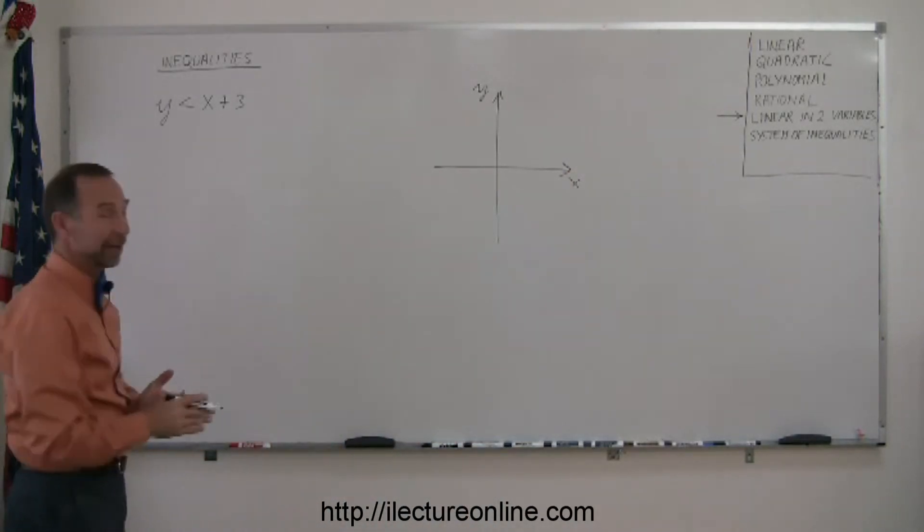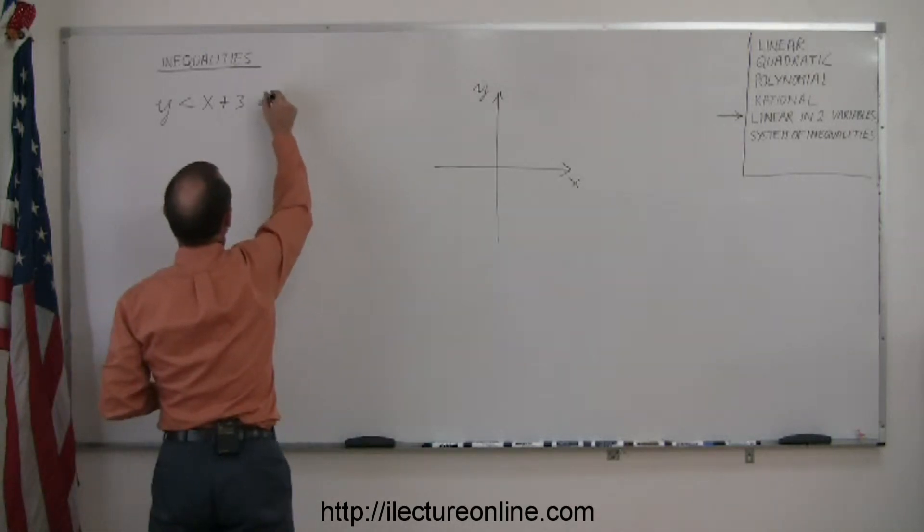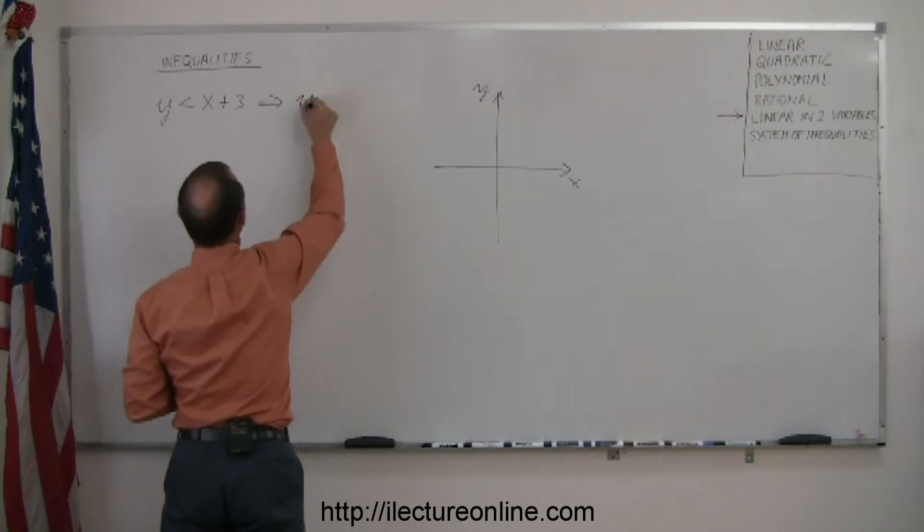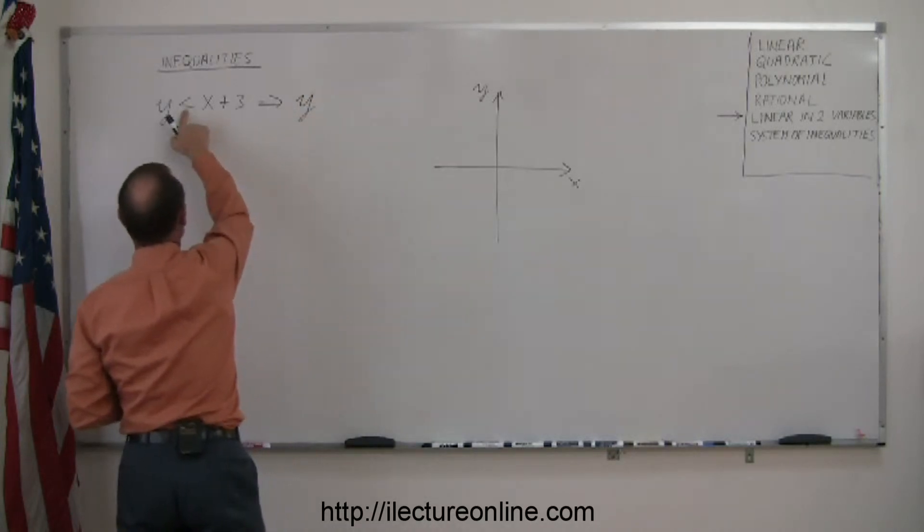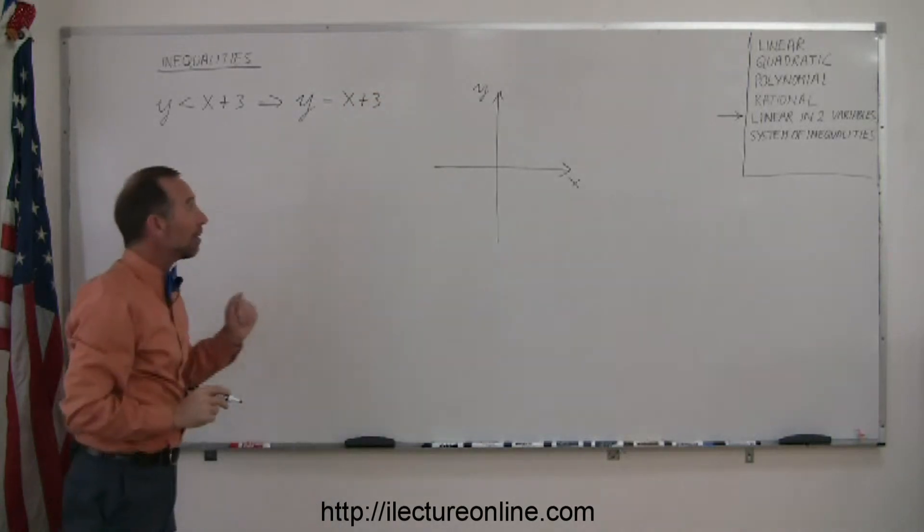To find that region, we want to find the boundary. The boundary can be found by taking this inequality and writing its equivalent equation by changing the less than sign to an equal sign. Then we graph that equation.